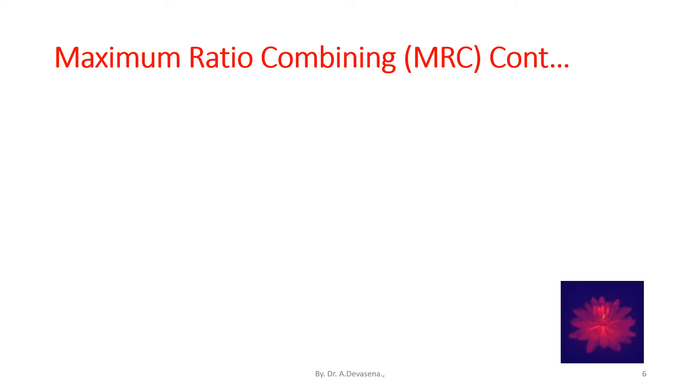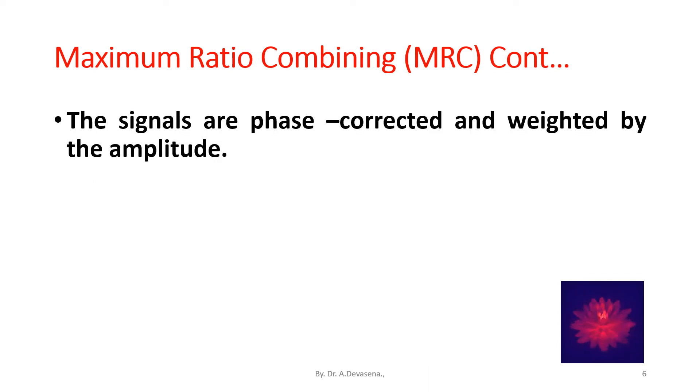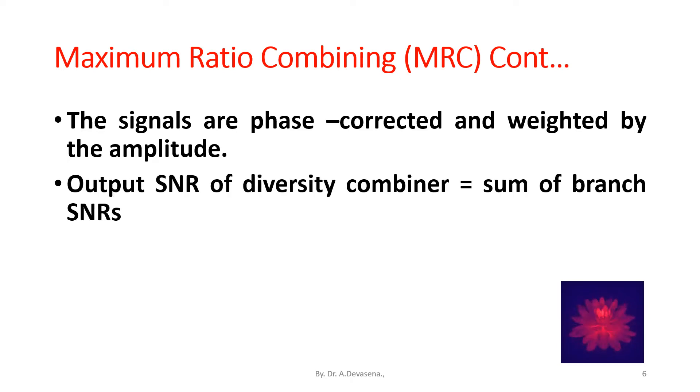The signals are phase corrected and weighted by the amplitude. Output SNR of the diversity combiner is equal to sum of branch SNRs. Gamma_MRC is equal to summation n equals 1 to N_R is equal to gamma_n.